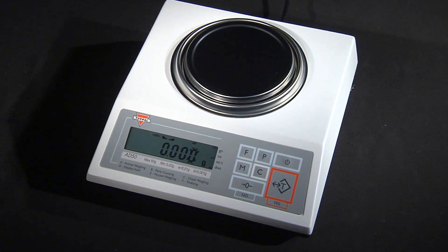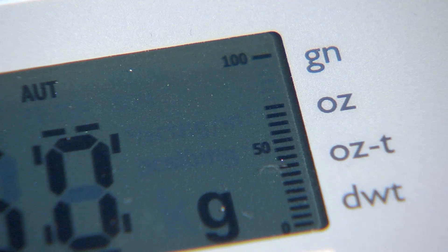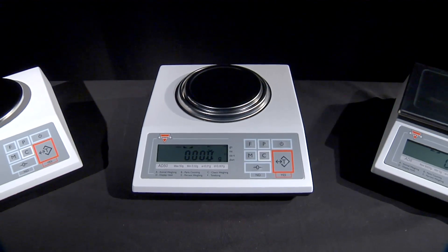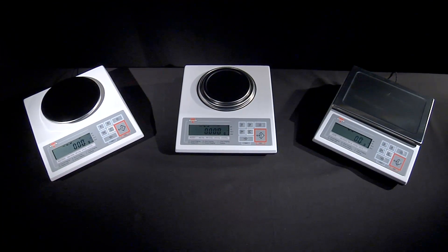All scales are equipped with a used capacity indicator that shows the amount of the scale's capacity used during weighing. This allows the user to avoid exceeding the maximum capacity of the scale.